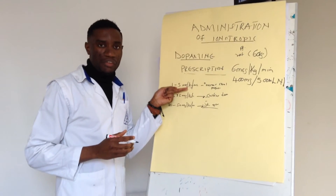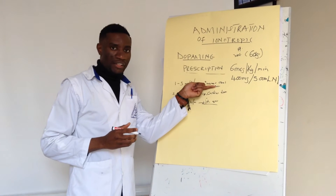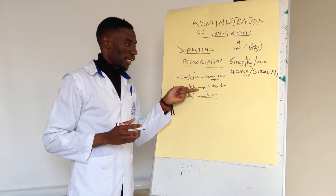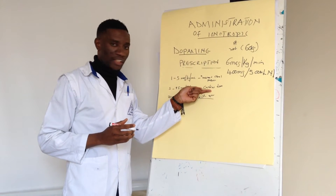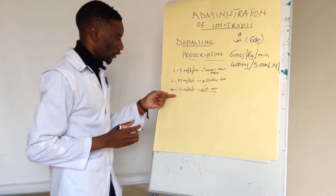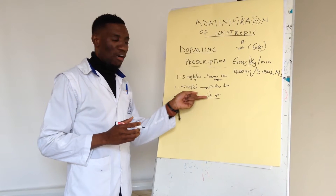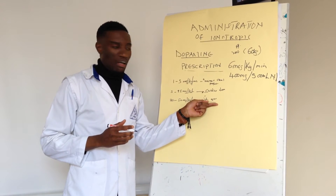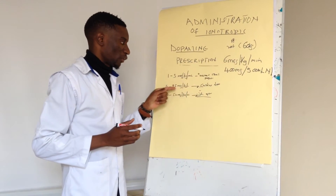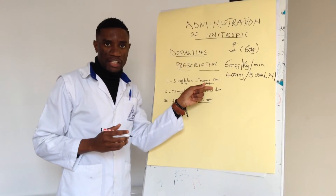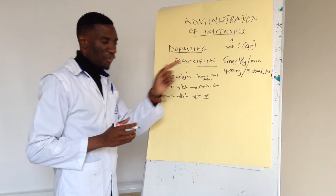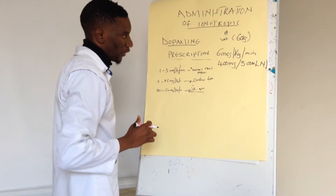In summary: at low doses dopamine increases renal perfusion; at 5 to 15 micrograms per kg per minute it is the cardiac dose, raising cardiac contractility and heart rate; and at 20 to 50 micrograms it causes vasoconstriction through alpha stimulation. In this case, the doctor has prescribed 6 micrograms per kg per minute, which falls in the cardiac range, raising blood pressure through cardiac stimulation.